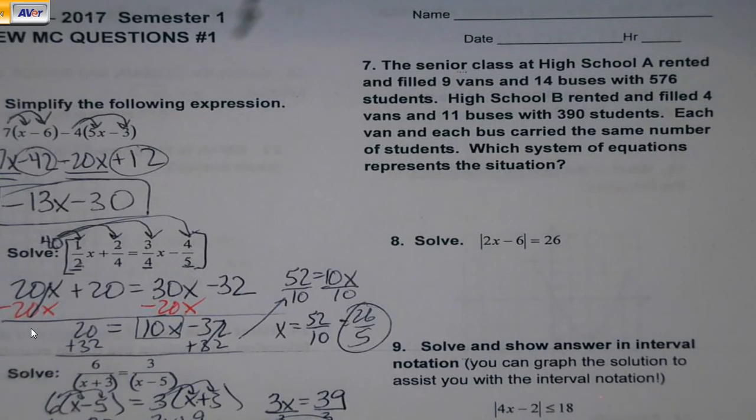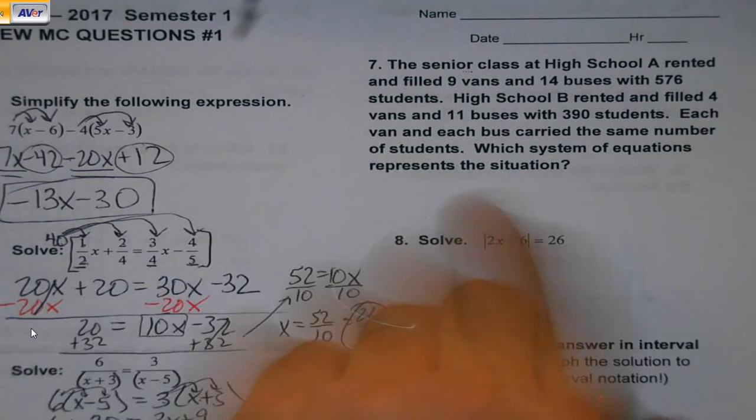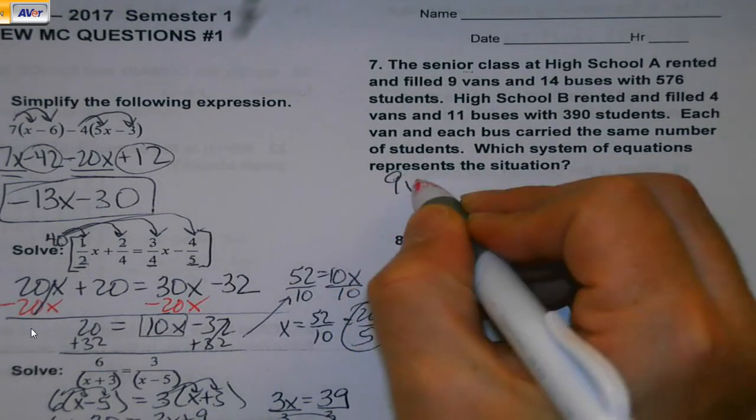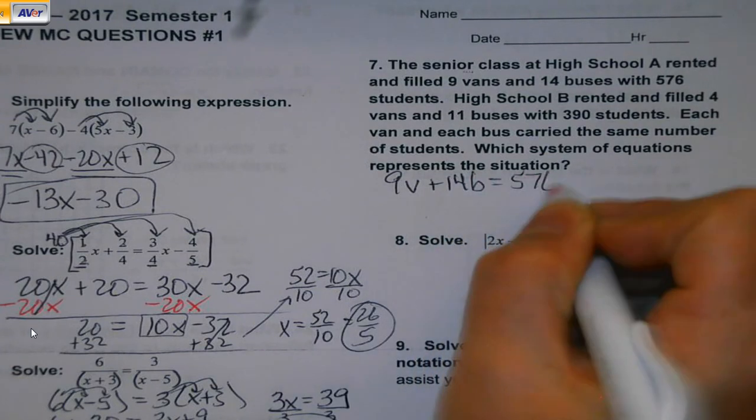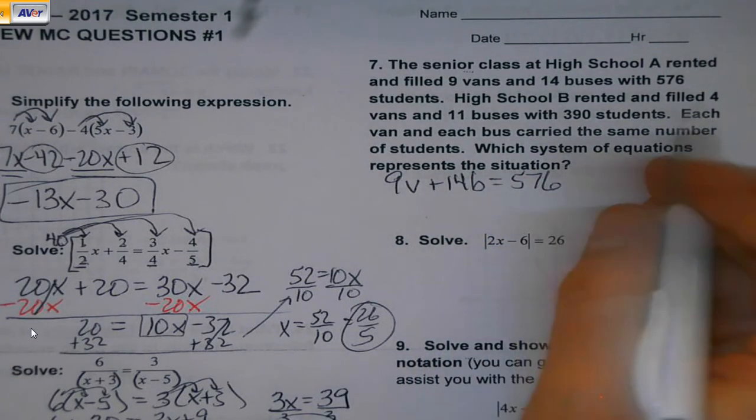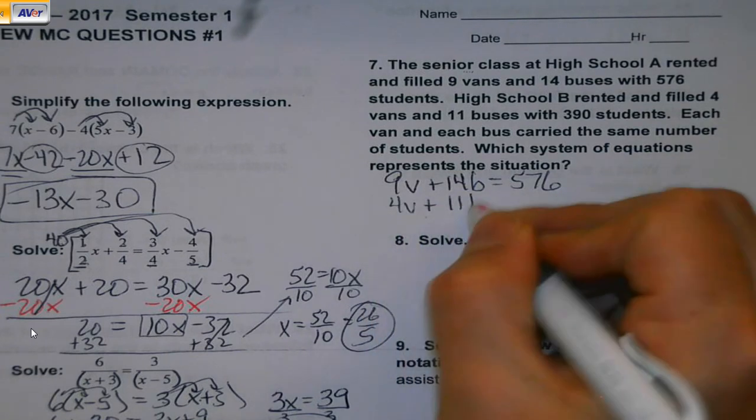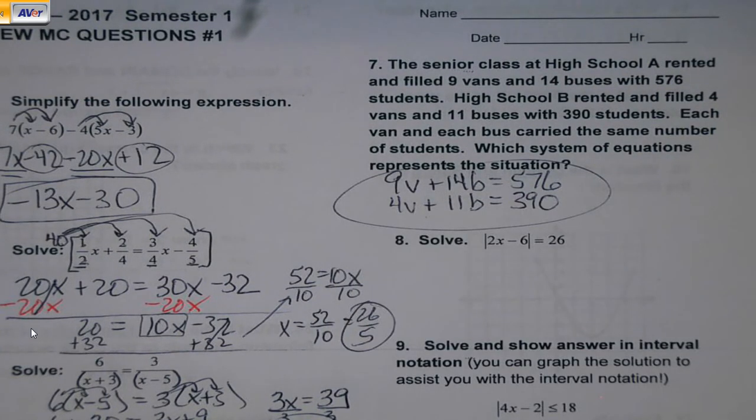Senior class at high school A rented and filled 9 vans. System of equations. You need to set this up. On the final, those systems will be there. You just have to pick the right one. But here, I'd have 9 vans and 14 buses. It's going to be 576 students. High school B, 4 vans, 11 buses, 390. That's it. Don't solve it. Just set it up. Go about your business.